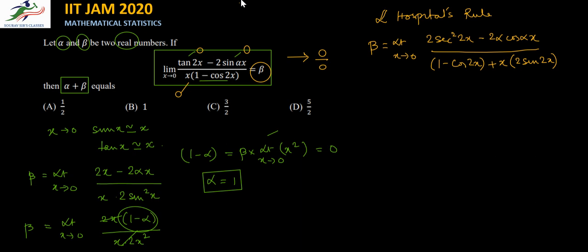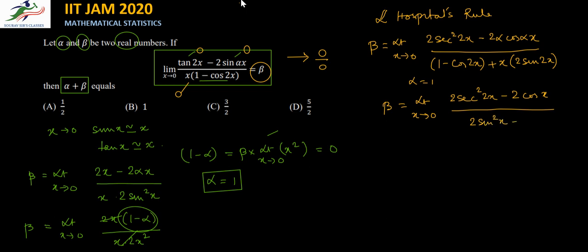Even after applying L'Hôpital's rule we are still stuck with a 0 in the denominator. We have already found alpha equal to 1, so let's substitute that. Beta equals limit x tending to 0 of: 2 sec² 2x minus 2 cos x in the numerator, divided by 1 minus cos 2x, which equals 2 sin² x, plus 2x sin 2x in the denominator.